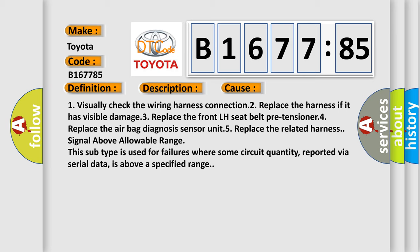1. Visually check the wiring harness connection. 2. Replace the harness if it has visible damage. 3. Replace the front LH seat belt pre-tensioner. 4. Replace the airbag diagnosis sensor unit. 5. Replace the related harness signal above allowable range.